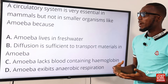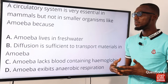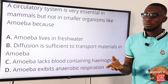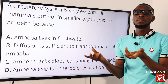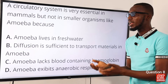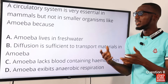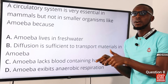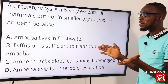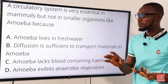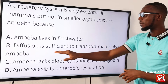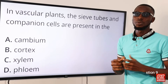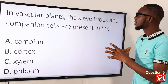Question eight: a circulatory system is essential in mammals but not in smaller organisms like amoeba because — when food is present in the food vacuole, enzymes secreted from the cytoplasm act on the food, making soluble products that diffuse from the vacuole back into the cytoplasm. So diffusion is sufficient to transport materials in amoeba. Option B is the correct option.